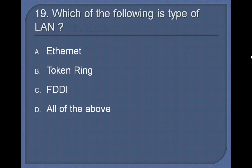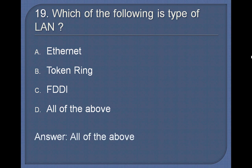Question 19. Which of the following is a type of LAN? Options: Ethernet, Token Ring, FDDI, All of the above. Answer: All of the above.